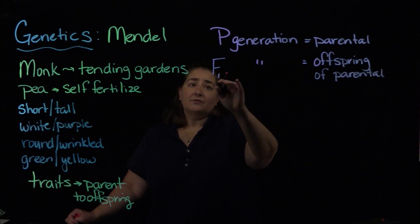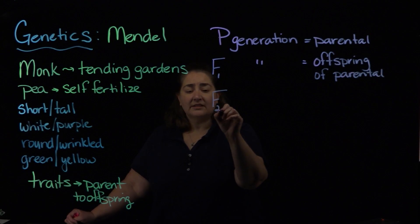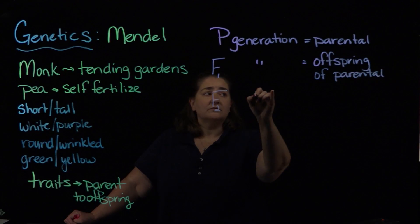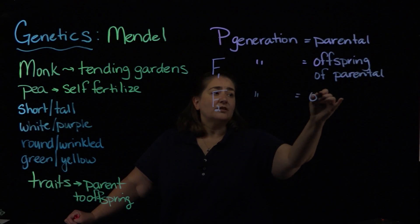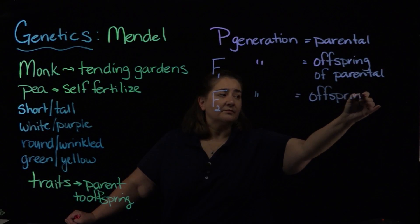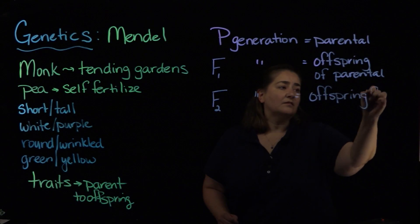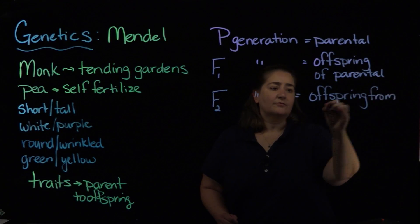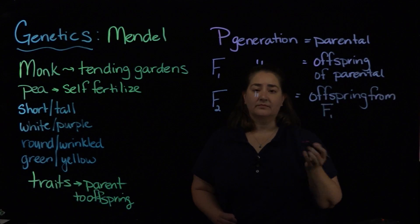So we've got P, we've got F1, the other one that we'll talk about in this class would be F2. That's going to be the offspring from the F1 generation.